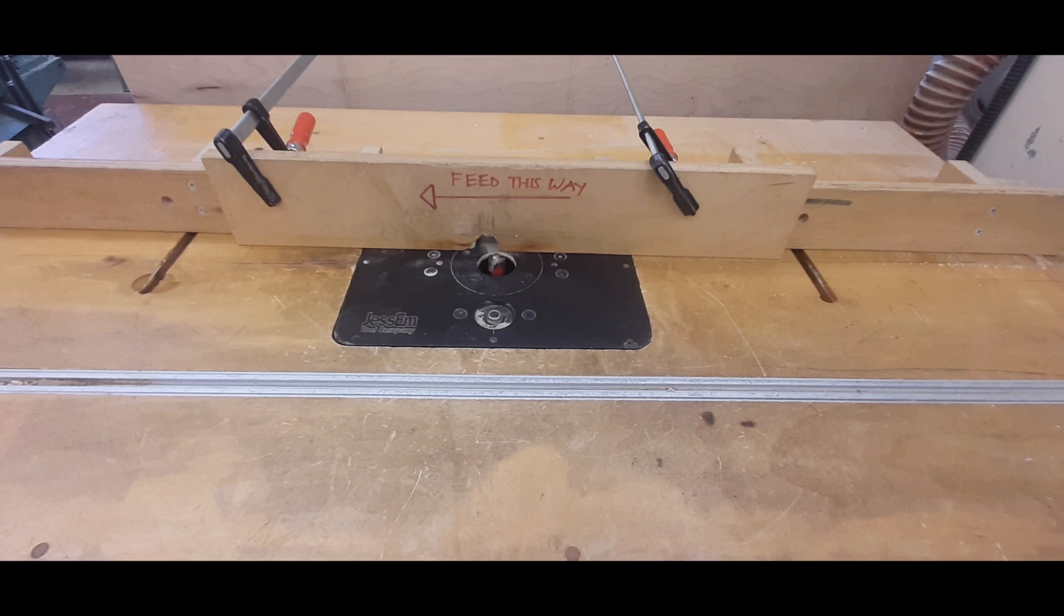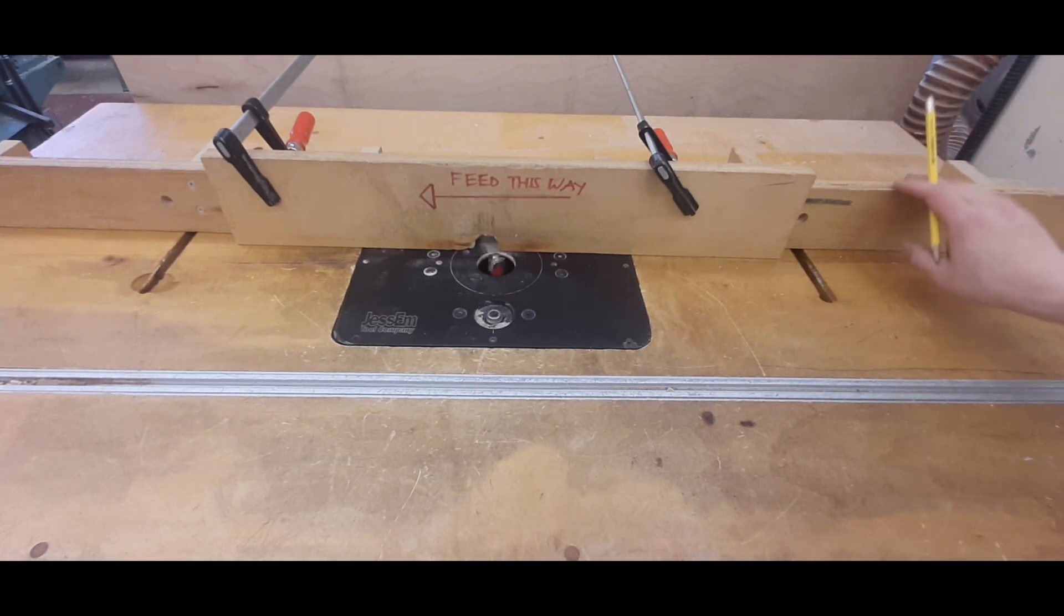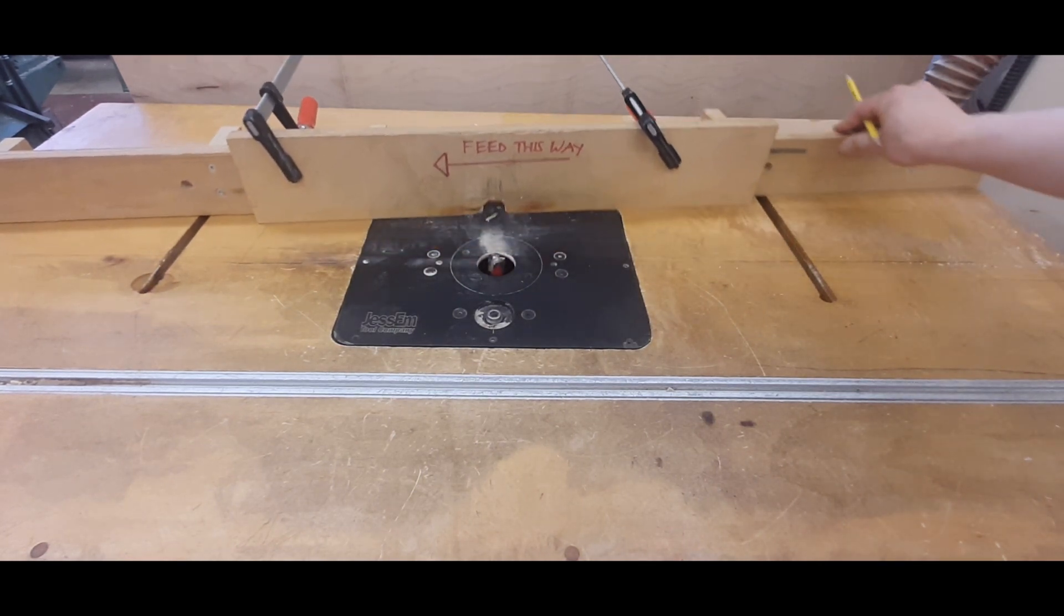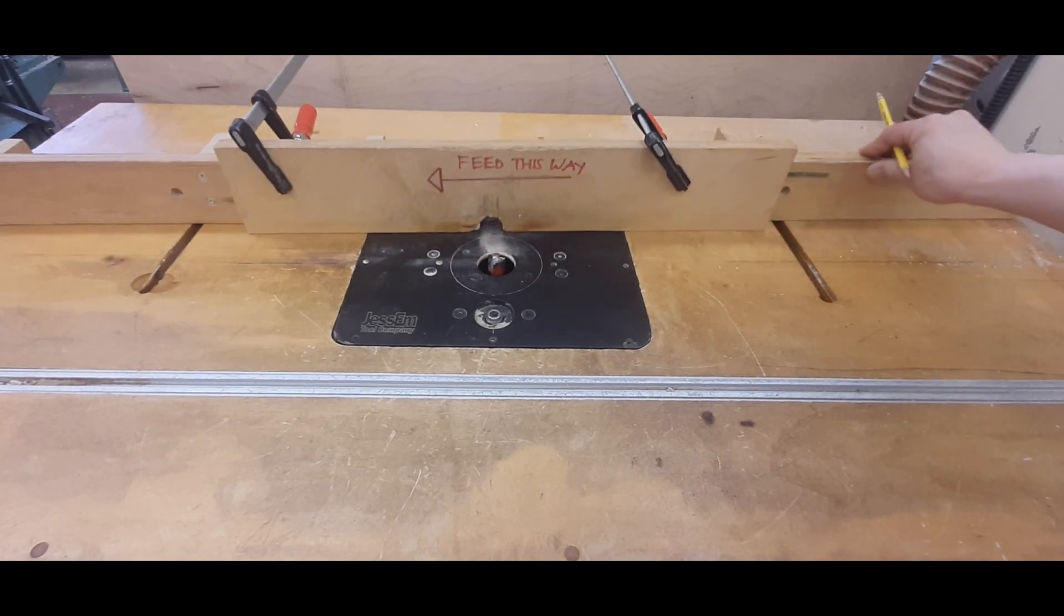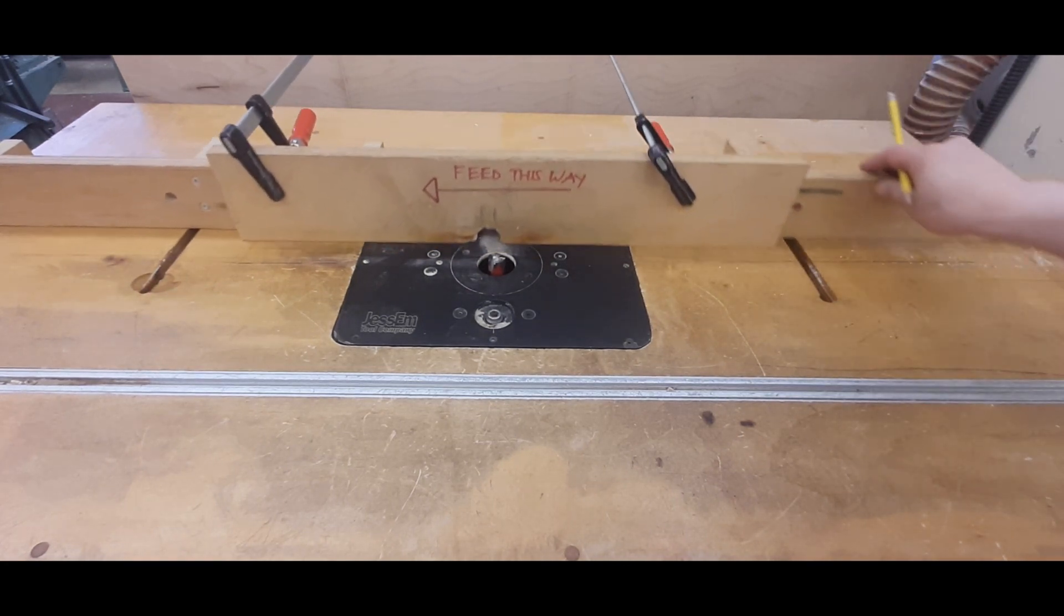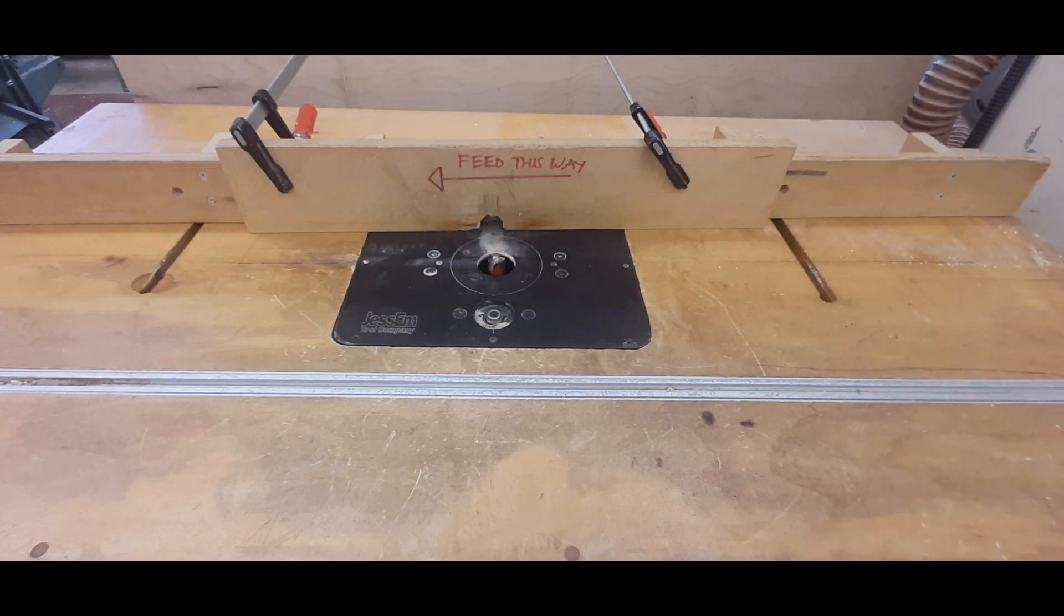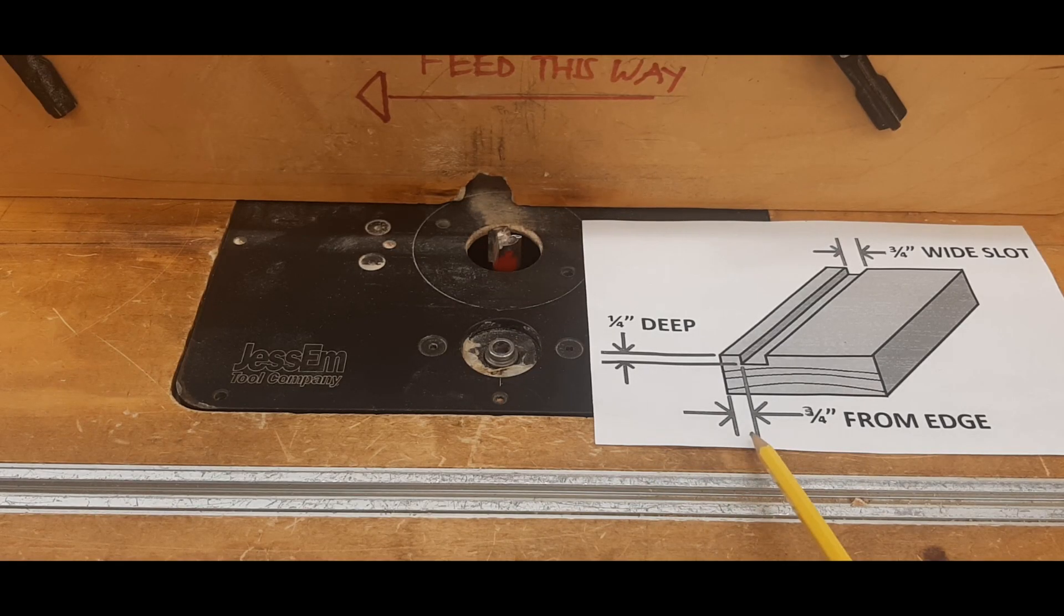Once we've got the height figured out, the next step is we're going to determine how far back or how far forward this fence should be. The distance of how far the fence should be is dependent on where you want to put your slot.